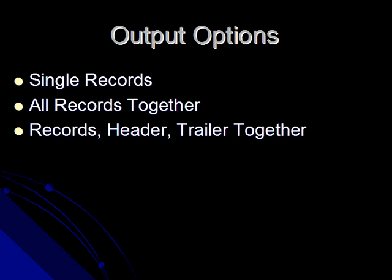We can have all of our records together — this will still strip off the header and trailer, but we will get all of our detailed records out as a single batch. Our last option is we can have our records, our header, and our trailer all together in a single document out of the flat file disassembler, which essentially converts the flat file document into XML documents.